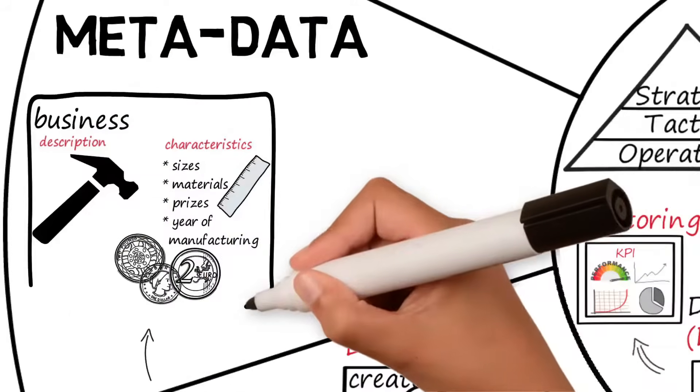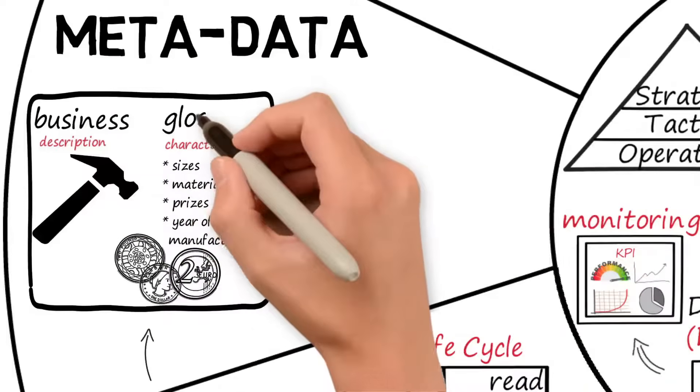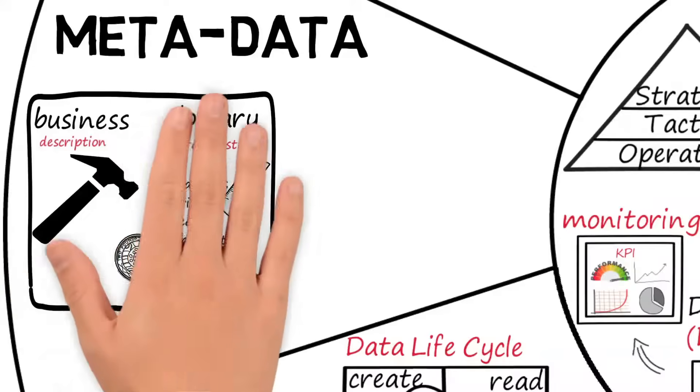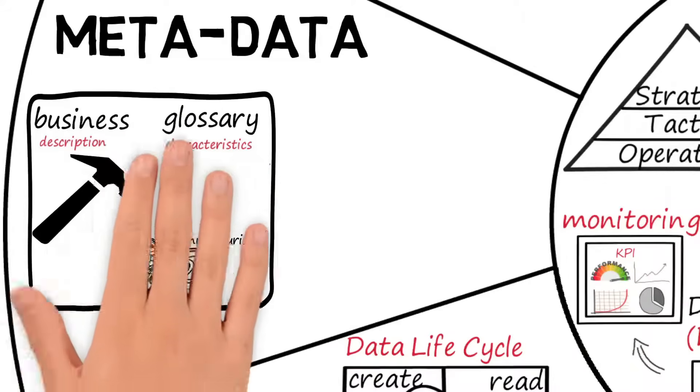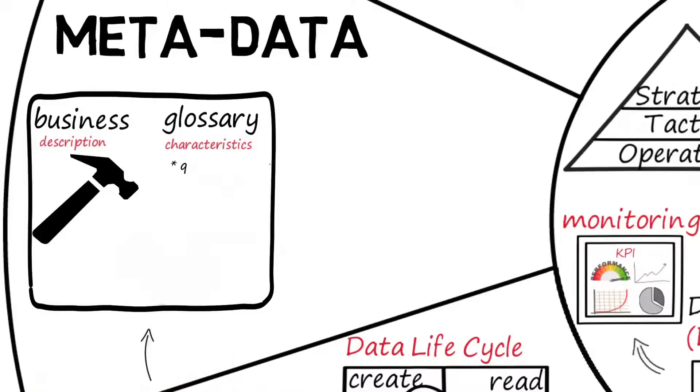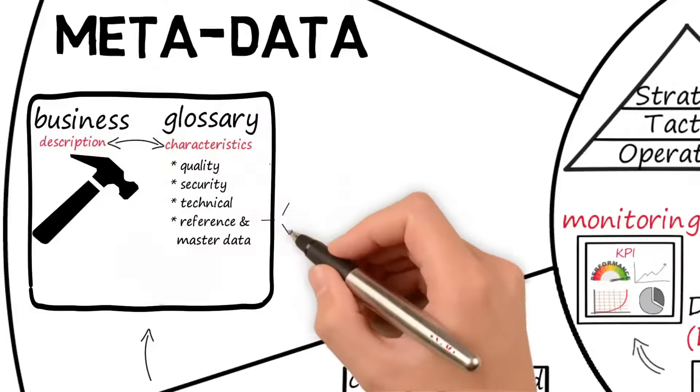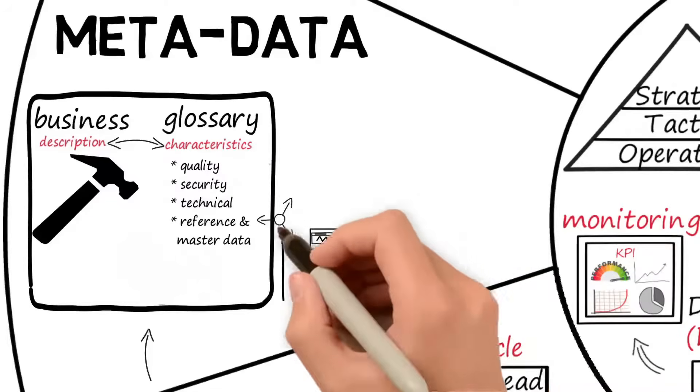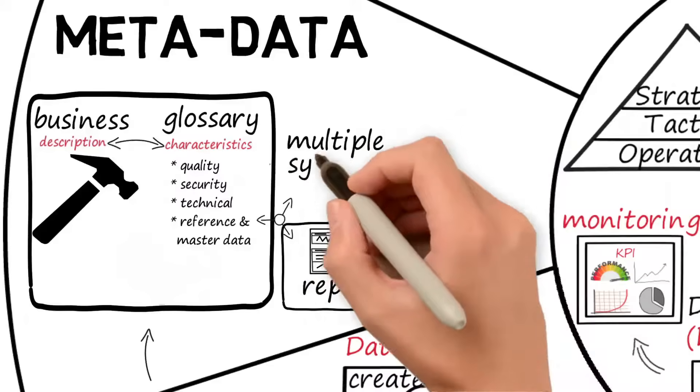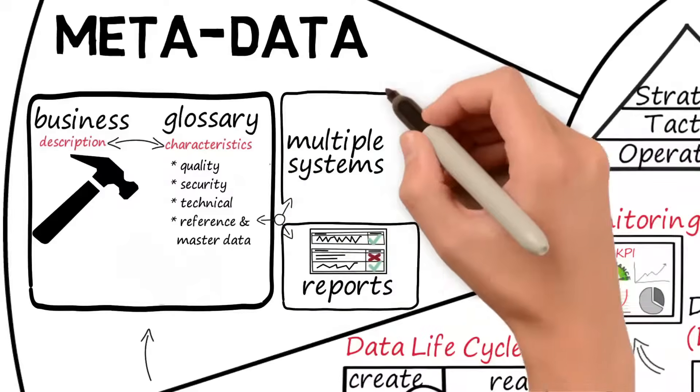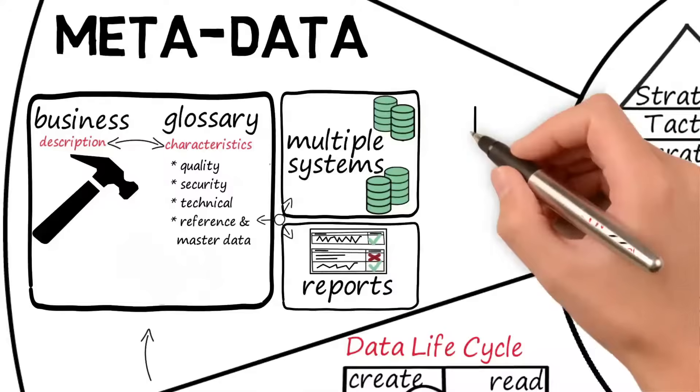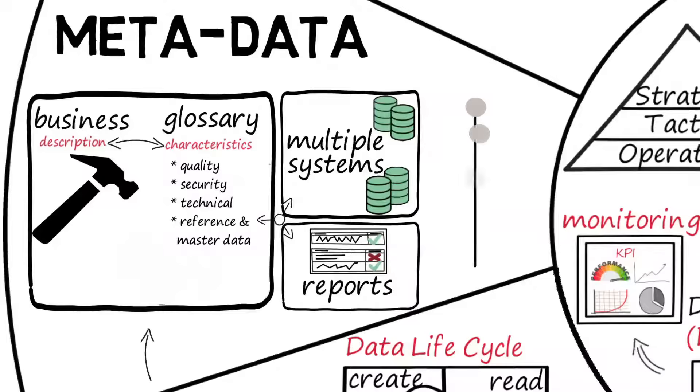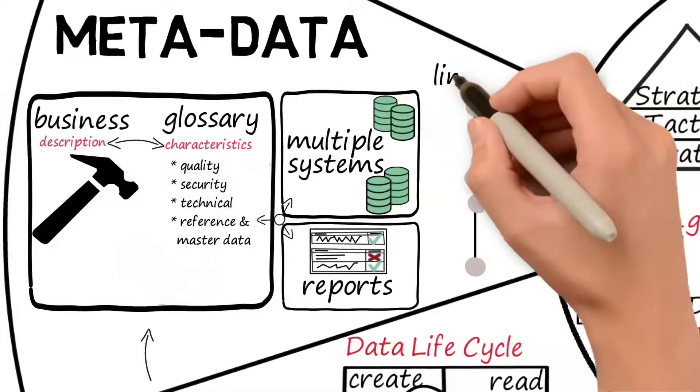The metadata needs to be stored at one location or glossary. When metadata such as the quality criteria, security characteristics, technical characteristics or even reference and master data characteristics are connected to the business definitions which are used in reports or analysis, it becomes possible to track a data element among all systems where it is registered. The tracking of a data element from its source to a report is called data lineage.